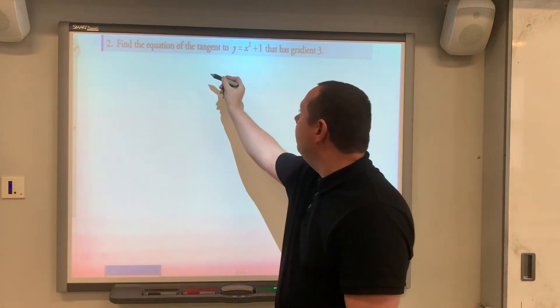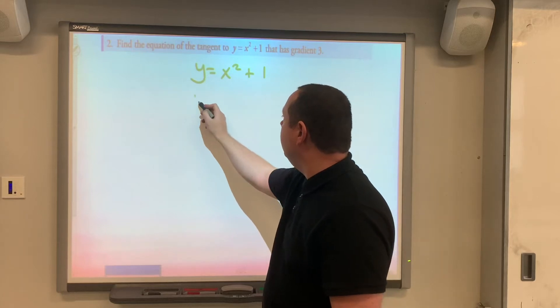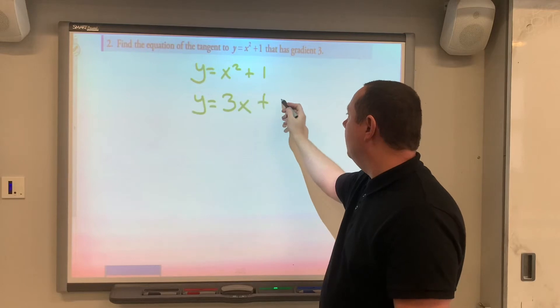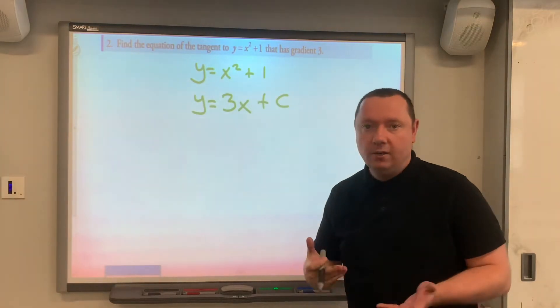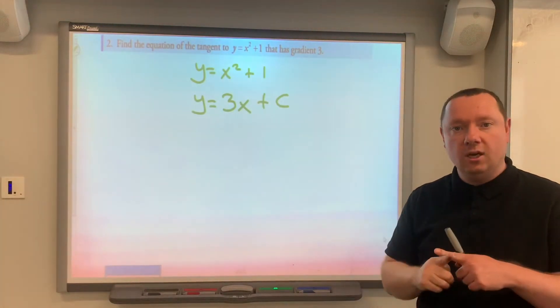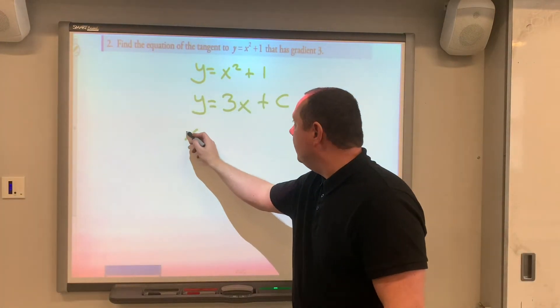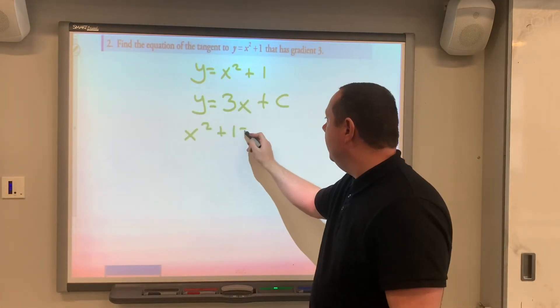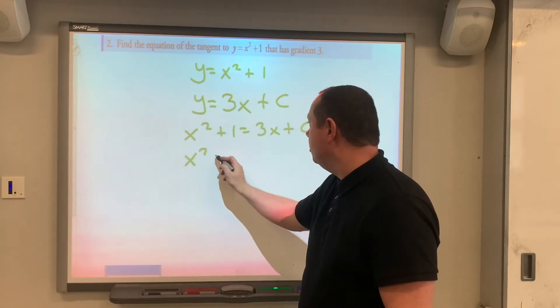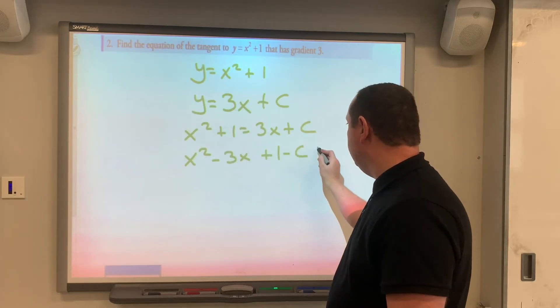So let's write down the equation we do have. We've got y equals x squared plus 1, and for an equation of a straight line we've got y equals mx where m is 3, plus some number c. Now we don't know where it cuts the y-axis, but we do know that would be the equation of a line. And we know since it's a tangent we touch, so we can make the equations equal to each other and solve. So we've got x squared plus 1 equals 3x plus c. Moving everything over to the left, x squared minus 3x plus 1 minus c equals zero.